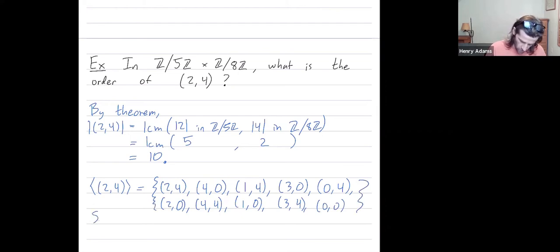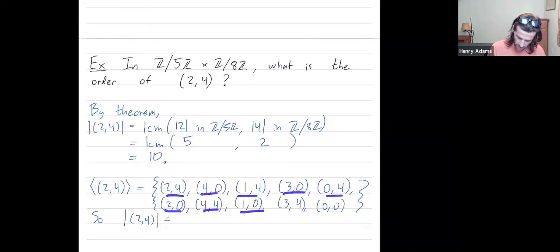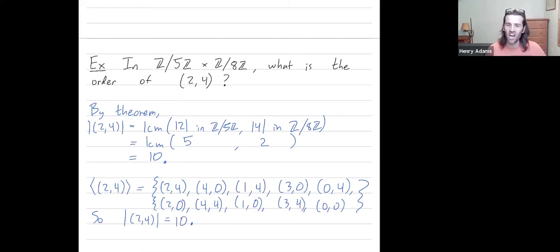So the order of element (2,4) — we had to add it to itself one, two, three, four, five, six, seven, eight, nine, ten times. So the order of this element is 10, agreeing with the theorem, which makes us happy.